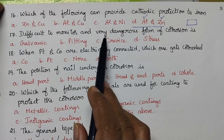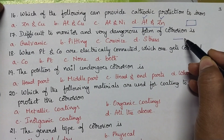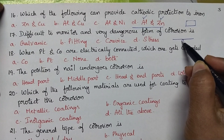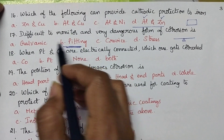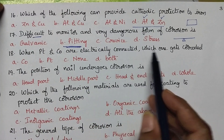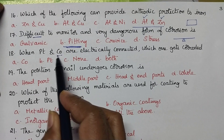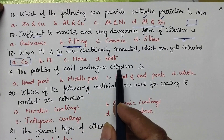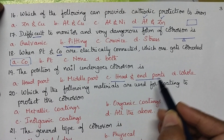The difficult to monitor and very dangerous form of corrosion is pitting corrosion. Whenever a crack is observed on a metallic structure, it is highly difficult to identify, and because of the small crack it creates a small anodic area — hence pitting corrosion is the most dangerous. When platinum and cobalt are electrically connected, cobalt undergoes corrosion as it is higher in the electrochemical series. Corrosion of a nail comes under stress corrosion, so both the head and tail parts undergo corrosion.